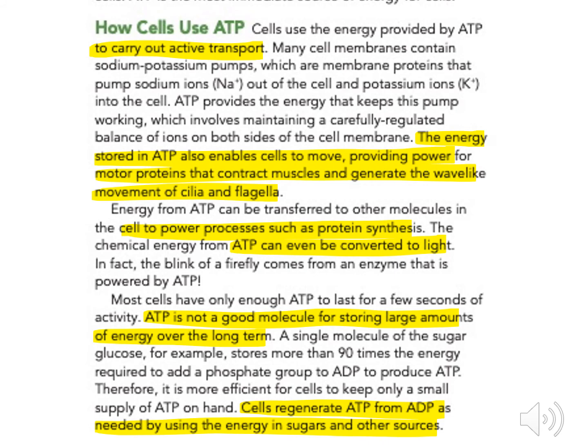Most cells have only enough ATP to last for a few seconds of activity. ATP is not a good molecule for storing large amounts of energy over the long term. A single molecule of the sugar glucose, for example, stores more than 90 times the energy required to add a phosphate group to ADP to produce ATP. Therefore, it is more efficient for cells to keep only a small supply of ATP on hand, regenerating ATP from ADP as needed by using the energy in sugars and other sources.